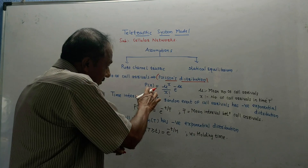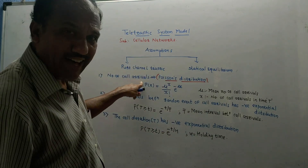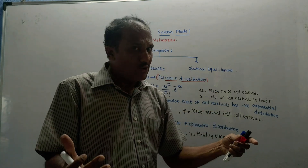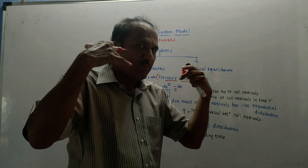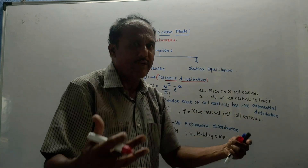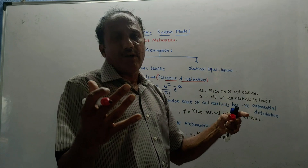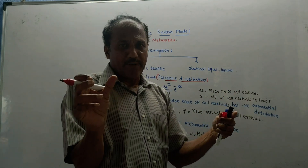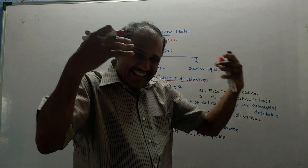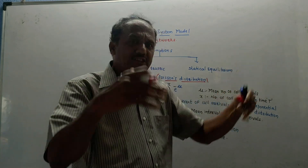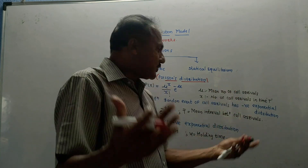By using this equation, we need to calculate the probability of number of call arrivals, because we don't have previous data or records. So we use probability to calculate how many calls can arrive in a particular time period. Using this calculation, the system management can decide if changes are needed in the infrastructure or cell structure.